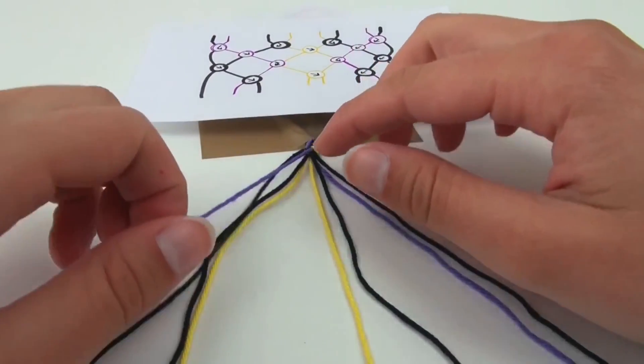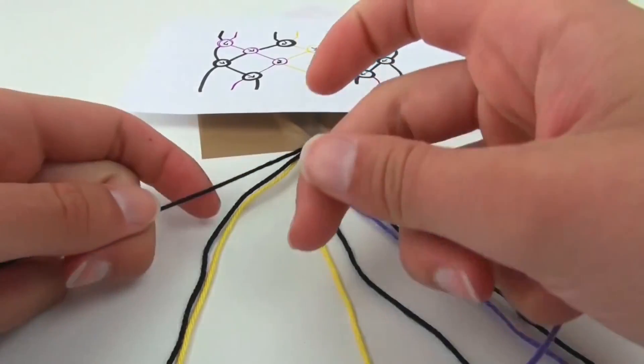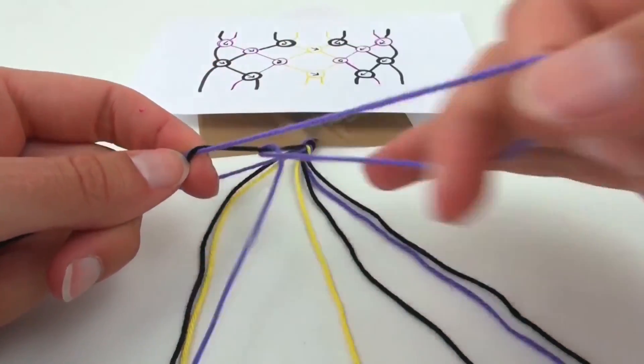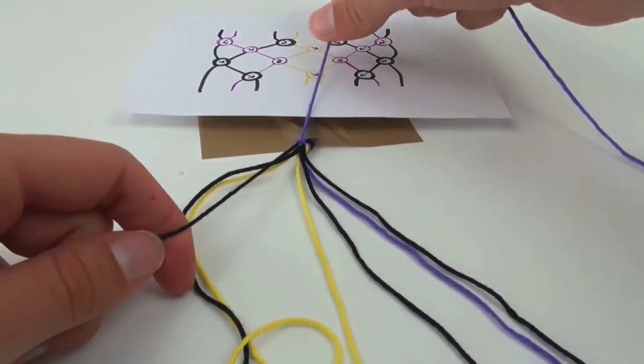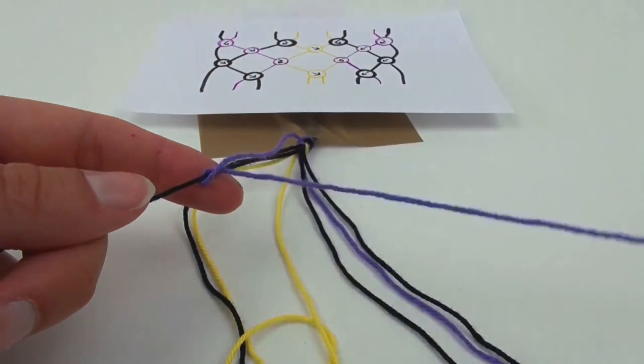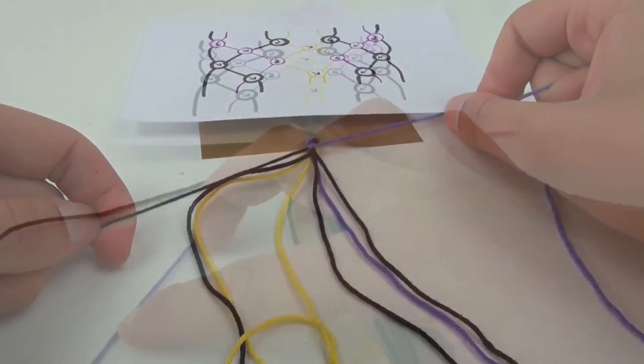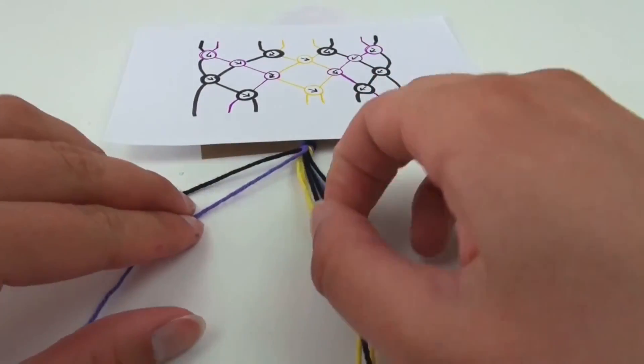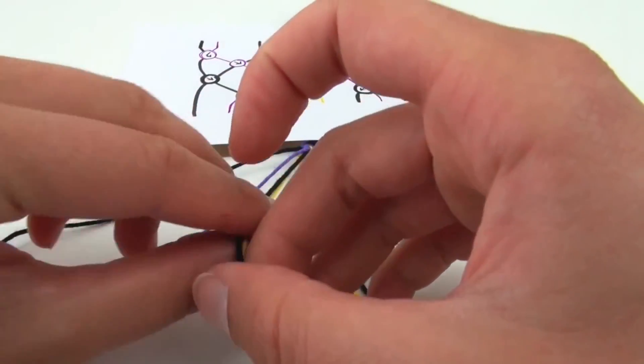We'll start with the left. We'll start with the purple and the black. So we'll go one knot backwards and then the other way. So one towards the left, one towards the right.